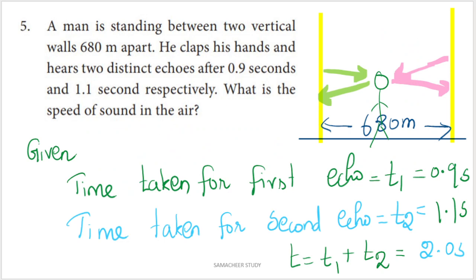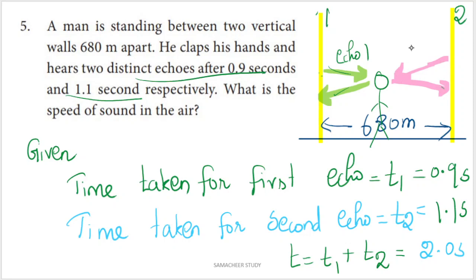Next question: A man is standing between two vertical walls 680 meters apart. He claps his hands and hears two distinct echoes after 0.9 seconds and 1.1 seconds respectively. There are two walls — wall 1 and wall 2. The echo from wall 1 arrives at 0.9 seconds and the echo from wall 2 arrives at 1.1 seconds.